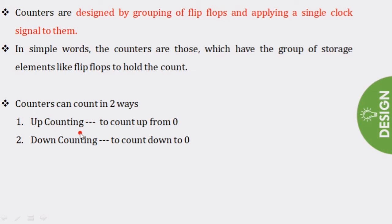We can observe up counting applications in cinema halls, ticket counters, or electronic voting machines — to count the number of votes or tickets sold. Similarly, down counting is applied in scenarios where we count from a high value to a low value, such as in races or satellite vehicle launches.